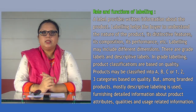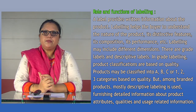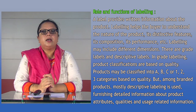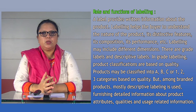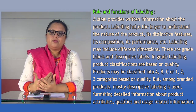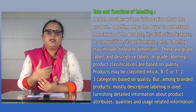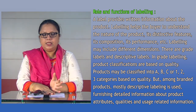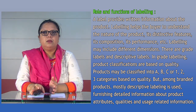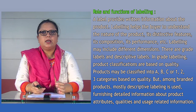Labeling may include different dimensions. There are grade labels and descriptive labels. In grade labeling, product classifications are based on quality — products may be classified into A, B, C or 1, 2, 3 categories. Among branded products, mostly descriptive labeling is used, where detailed information about product attributes, qualities, and uses is furnished. For example: date of manufacture, date of expiry, contents in the product, whether there are any child-sensitive ingredients — all these details are given in the labeling.